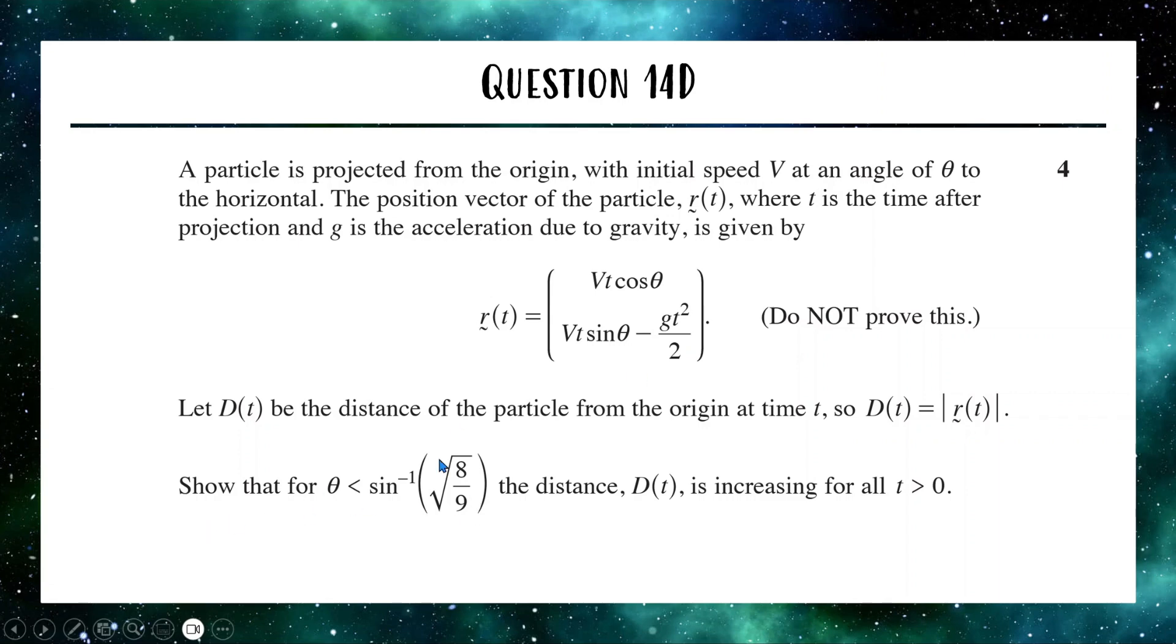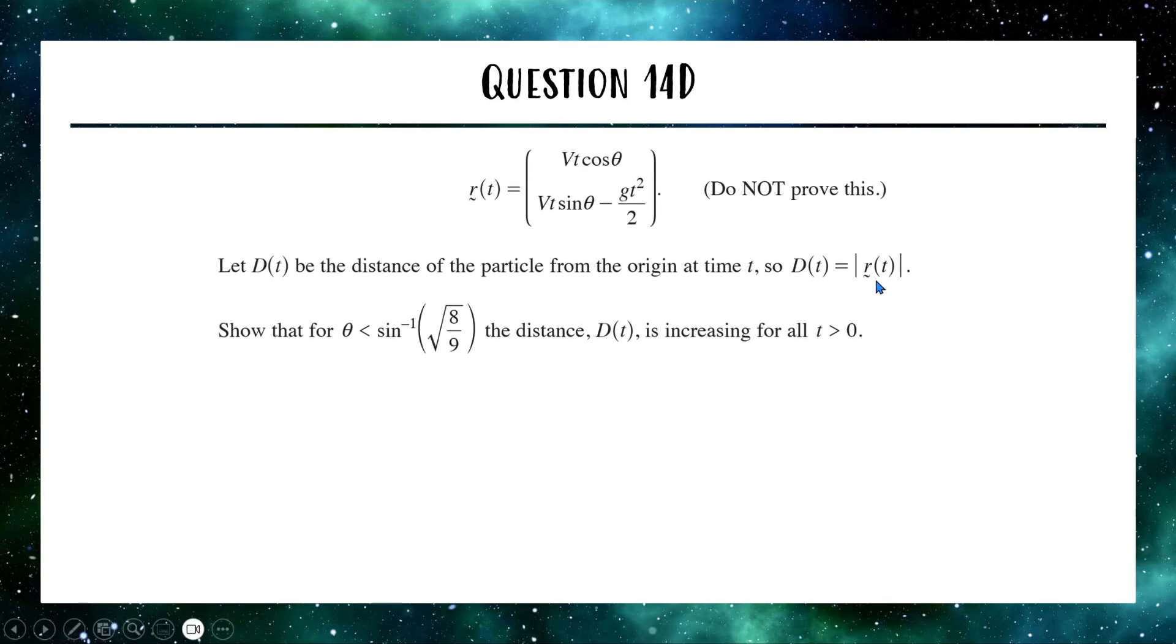We want to show that for this angle, our distance is always increasing. So our approach here is going to be, let's find the magnitude of this vector. The way we find the magnitude of vectors is we take the two x and y components, we square them and add them together and then do that in a square root. Basically a big bit of Pythagoras.